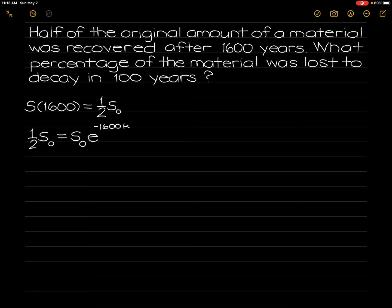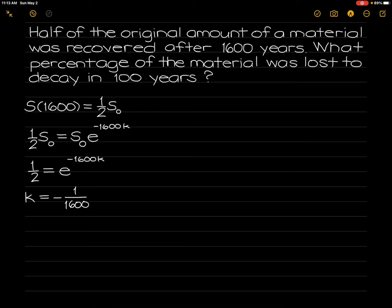So, one-half is equal to e raised to the negative 1,600 times k. Therefore, k is equal to negative 1 over 1,600 times the ln of 1 over 2.